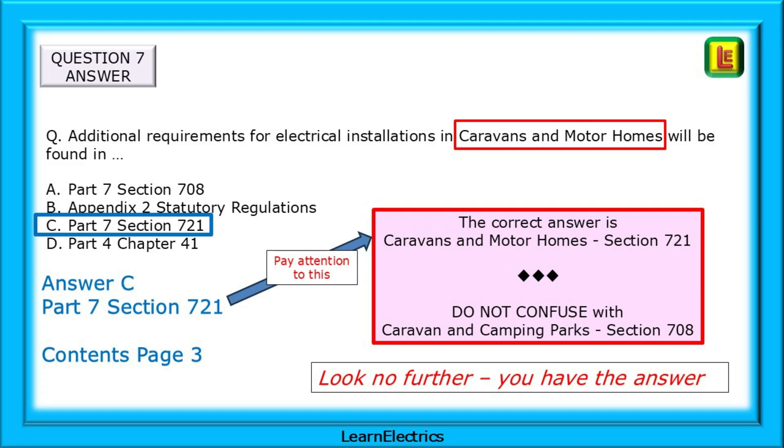Work your way down the list of possible answers, A, B, C, and D in turn, and comparing these to page 3, you will find the answer. Once you have the answer, look no further. The question and answer states caravan and motorhomes, which is section 721. Do not confuse it with caravan and camping parks, section 708, which is the wrong answer.